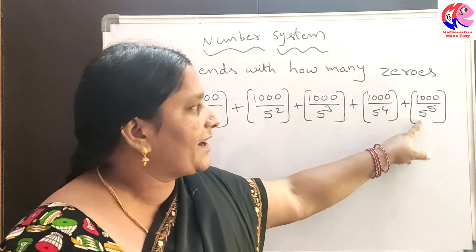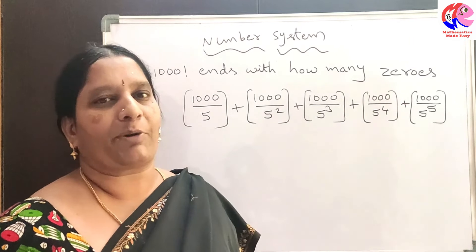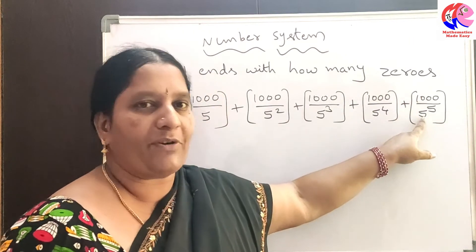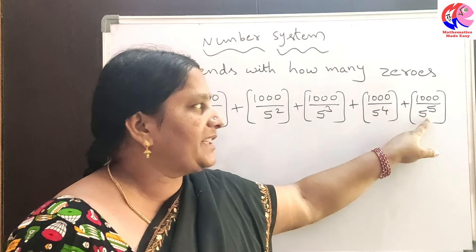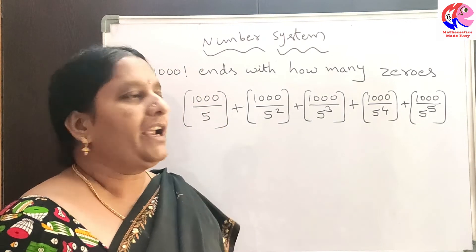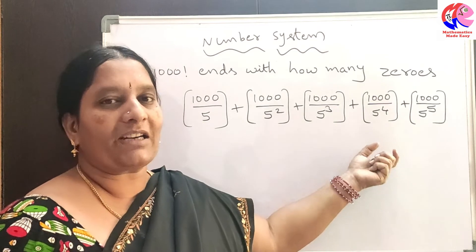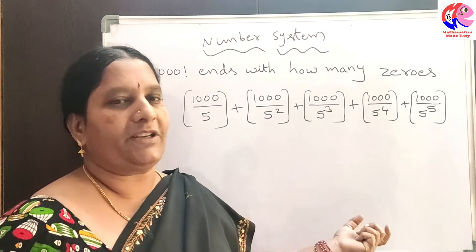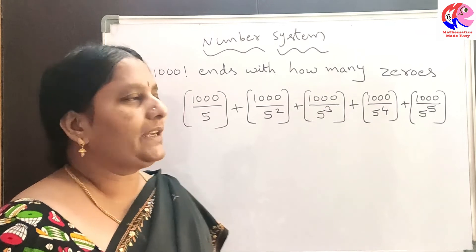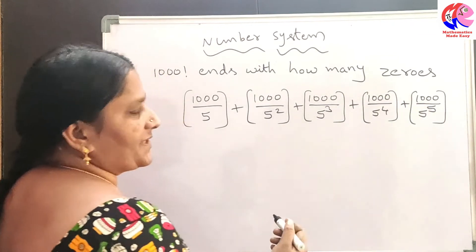Whenever the denominator is greater than the numerator, we need not continue the process. Since 1000 divided by 5⁵ is 1000 by 3125, it becomes 0-point-something. The integral part of 0-point-something is zero, so we stop at this term and do not proceed further.